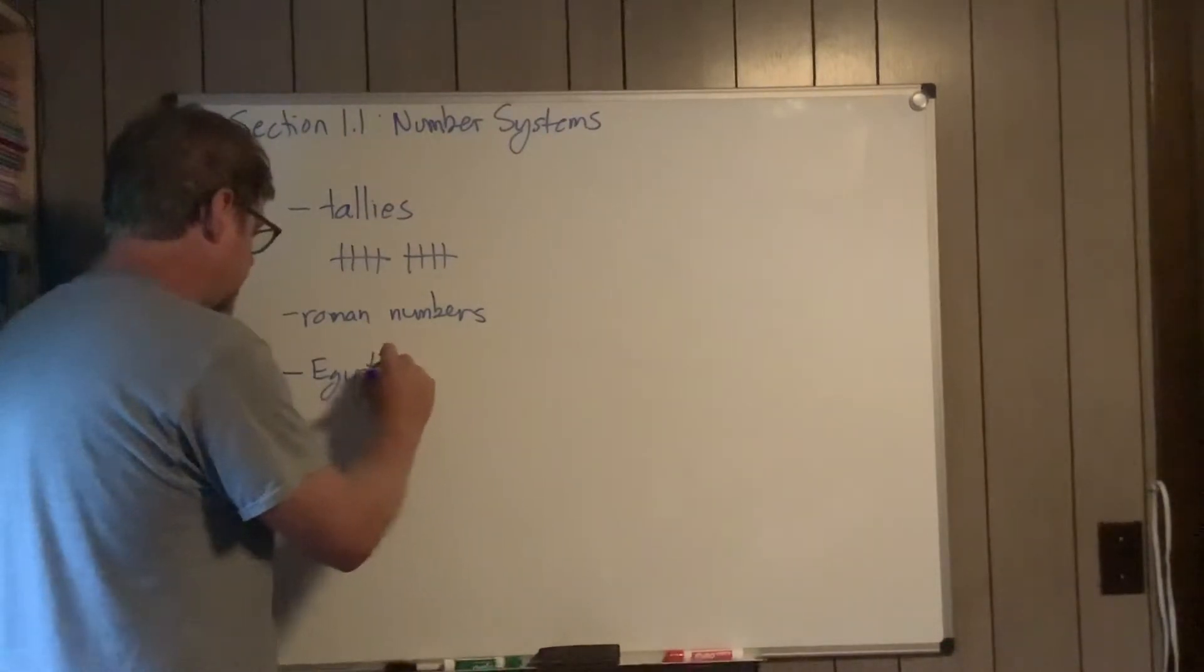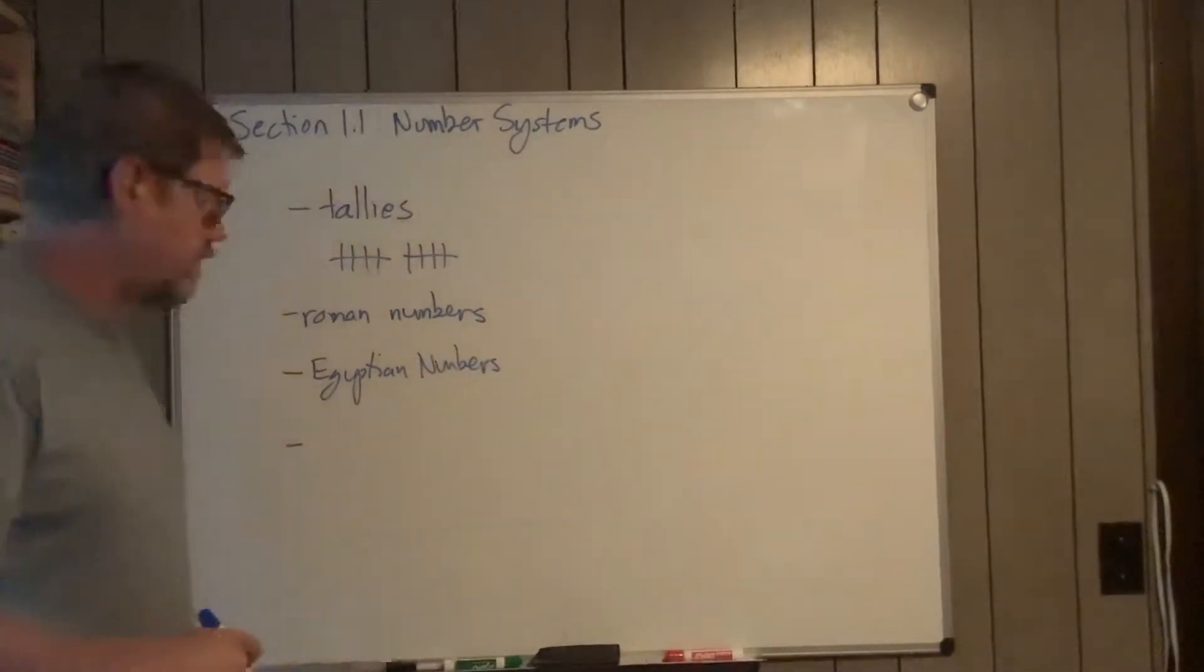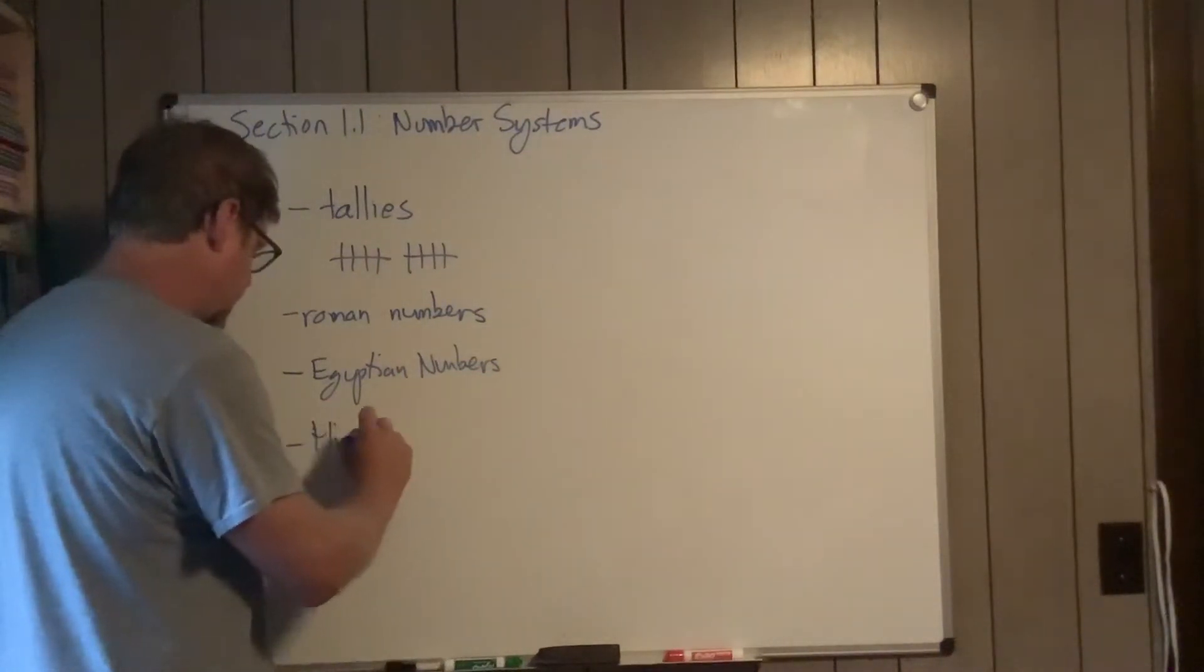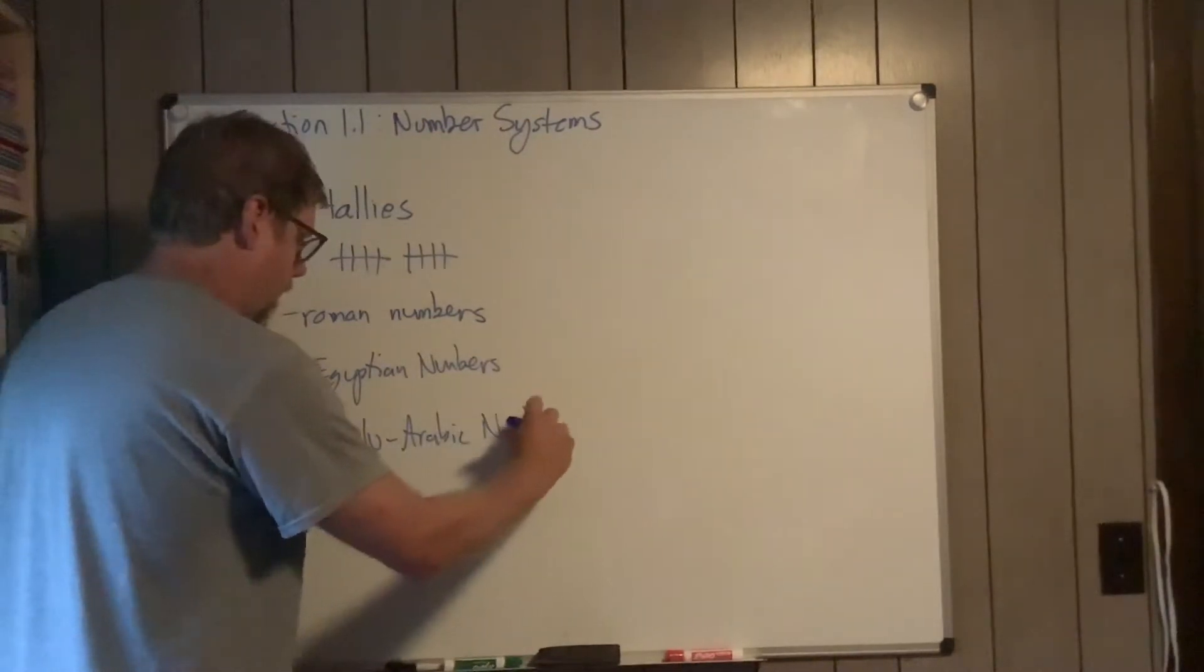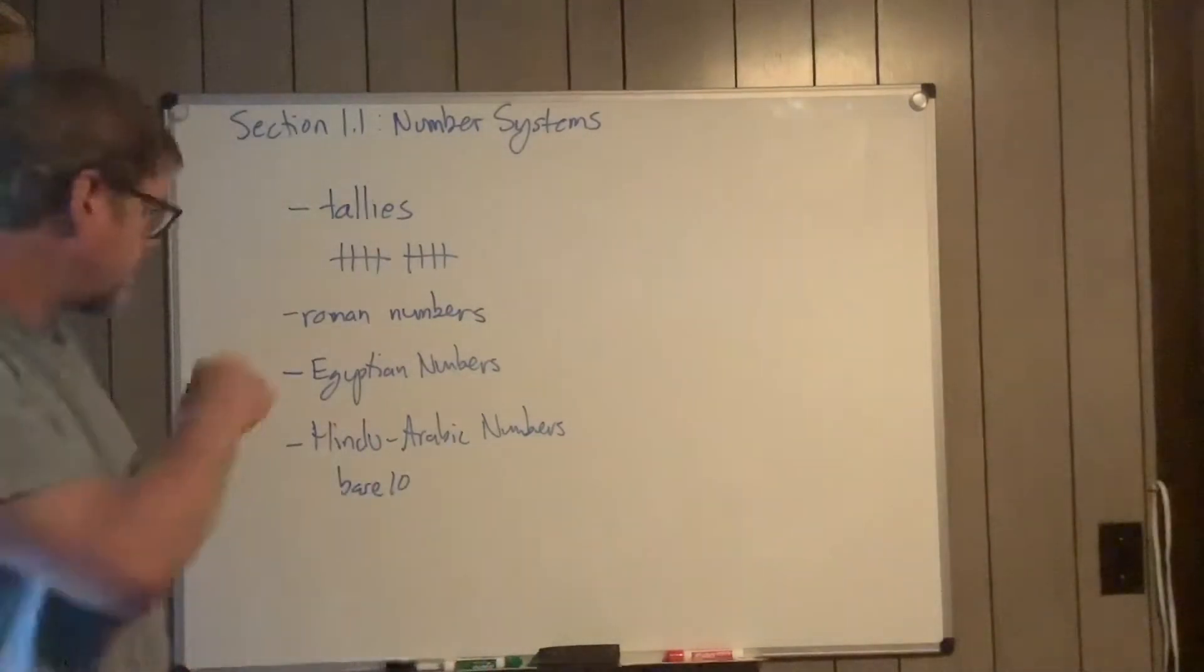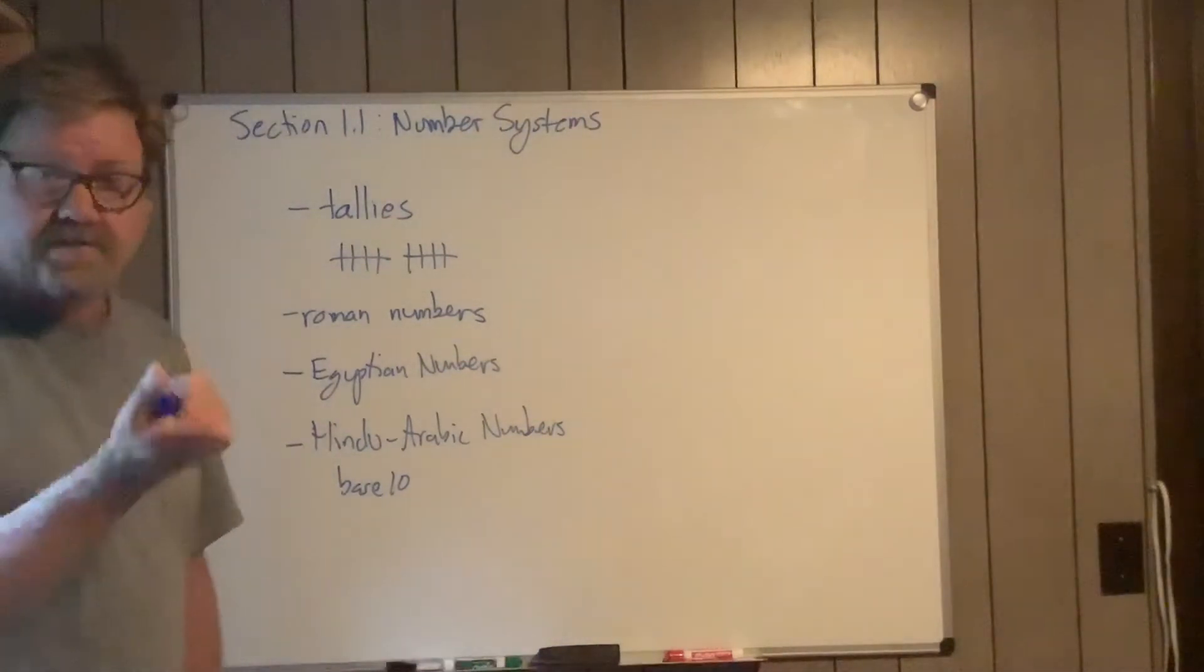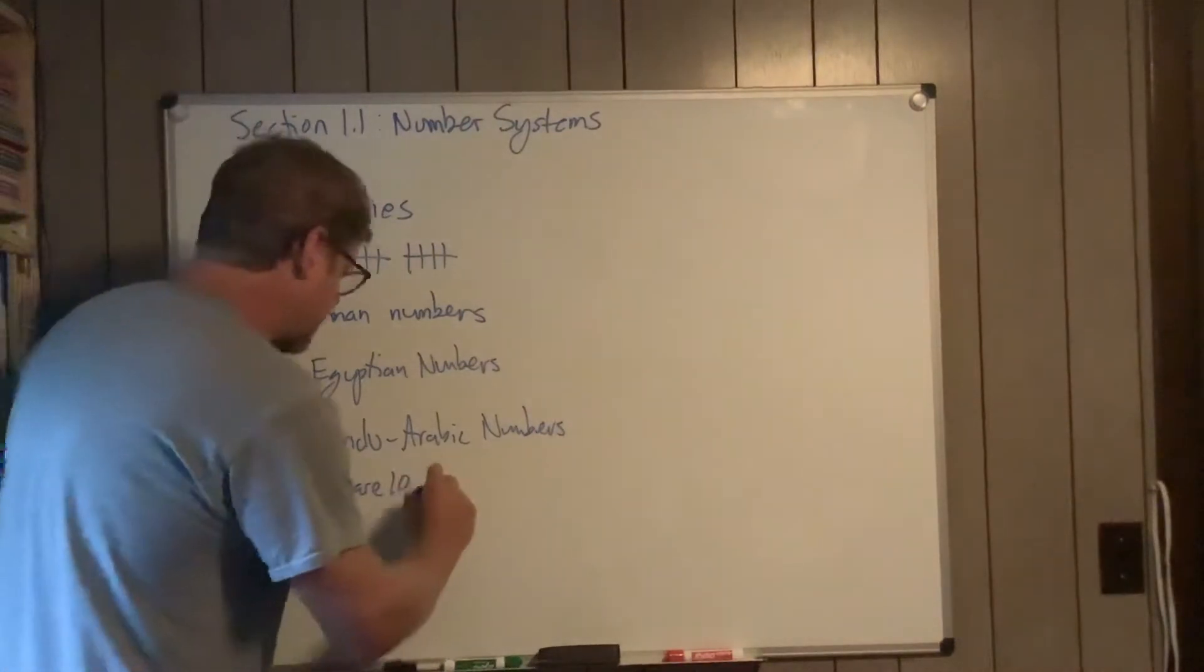The Egyptian numbers, I'm also going to talk about that later. The number system that we use is called the Hindu-Arabic system. This is base 10. We have the digits 0 through 9, so there's 10 possible digits. That's why it's base 10. It's also a place value system.